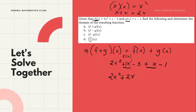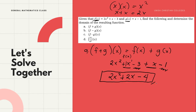Finally, for the constants, we have two: negative 3 and negative 1. Combining them: negative 3 minus 1 equals negative 4. So the final answer for (f+g)(x) is 2x² + 2x - 4.